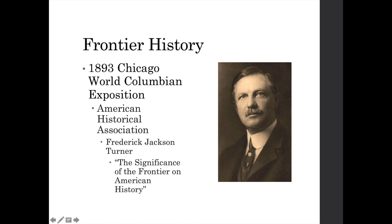In 1893 in Chicago at the World Columbian Exposition, historian Frederick Jackson Turner delivered a paper for the American Historical Association called 'The Significance of the Frontier on American History.' Up until then, most American history had been written from a European perspective looking west across the Atlantic. Turner turned this on its ear, looking at American history from the west — arguing that history was influenced by a series of borders, places where cultures collided, came into contact, and interacted. That was his idea of the frontier.